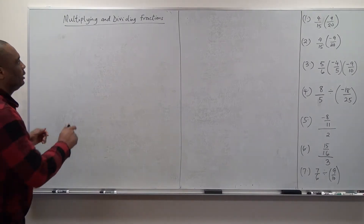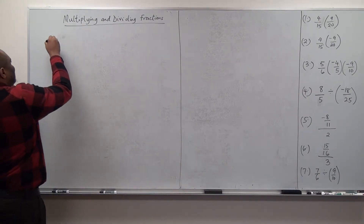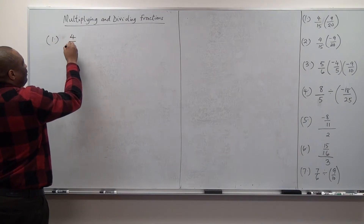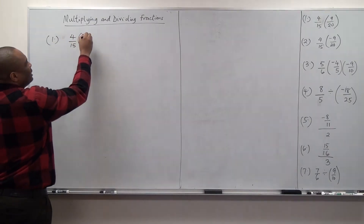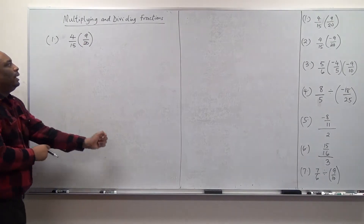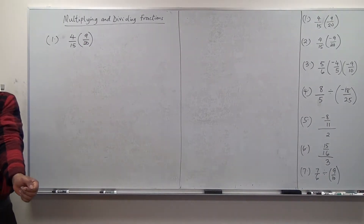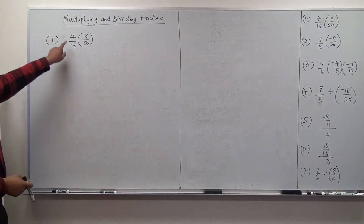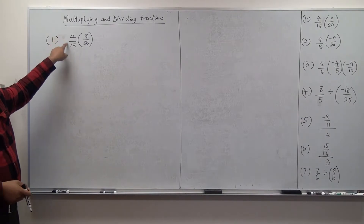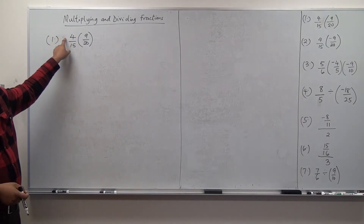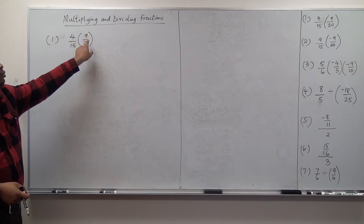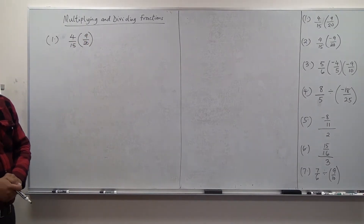We shall start with multiplying. Let's take an example. Example 1: 4 over 15 times 9 over 20. In this case, look at the sign. What is the sign before 4 over 15? It's a positive sign. What is the sign before 9 over 20? It's also a positive sign.